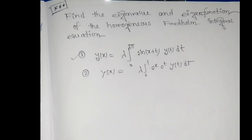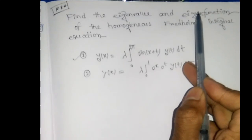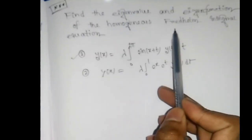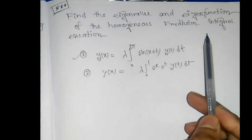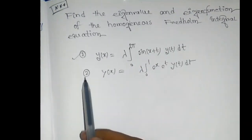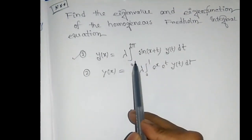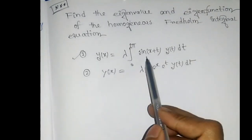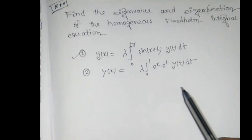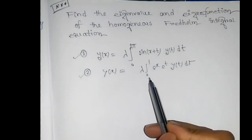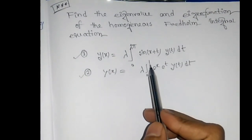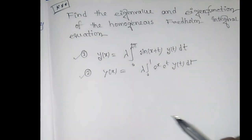Hello friend, today we will discuss a question taken from integral equations. The question is: find the eigenvalue and eigenfunction of the homogeneous Fredholm integral equation. Number one: y(x) = λ ∫₀²π sin(x+t) y(t) dt. And number two: y(x) = λ ∫₀¹ eˣ · eᵗ · y(t) dt.